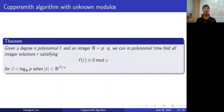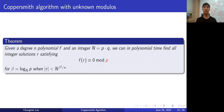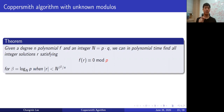Now we move on to the first variant of the Coppersmith theorem. It says that given some polynomial f of degree n and some integer modulus N, where N = P·Q, we can efficiently find all small integer solutions modulo P. Defining beta equal to log_N(P), the small solutions satisfy the bound: the size of r is less than N to the beta^2 over n. Compared to the original theorem, we want to find the solution of f modulo P instead of modulo the given integer N.